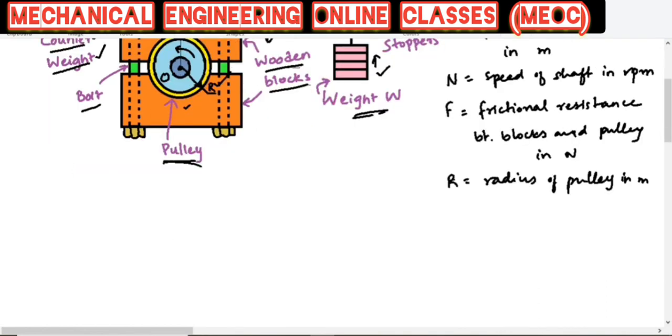To find the torque due to frictional force at the shaft, the torque that is generated on the shaft is simply F into R. The frictional force times radius will be the torque.